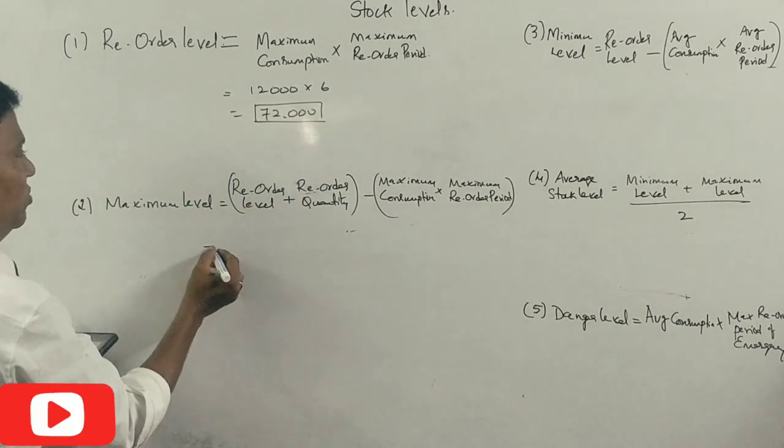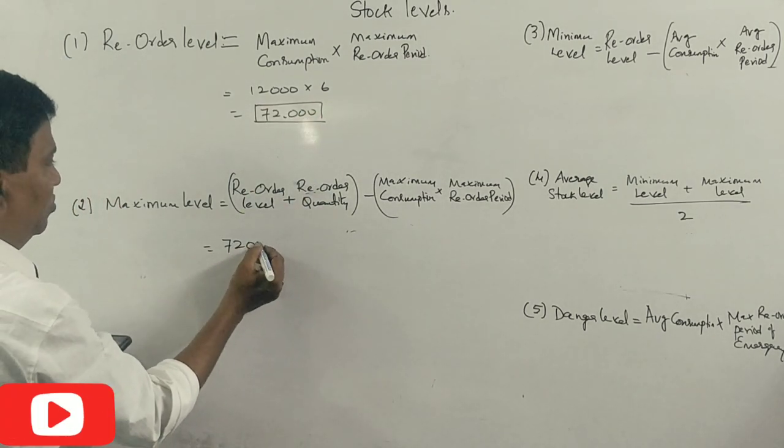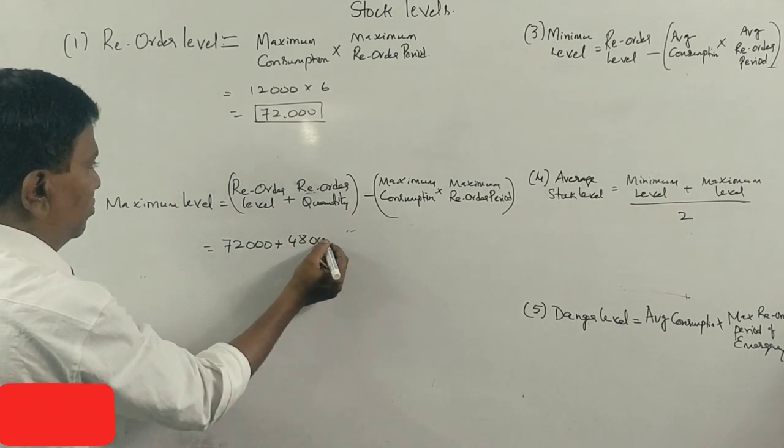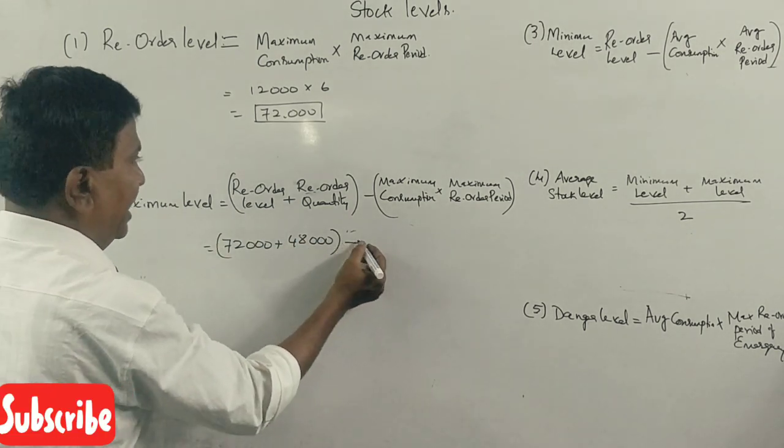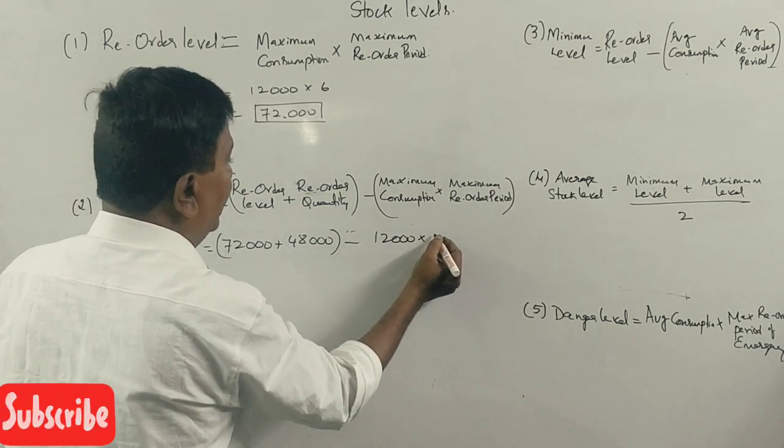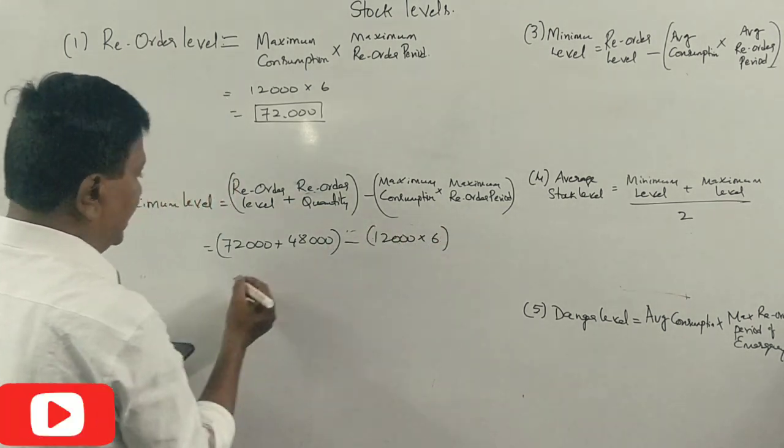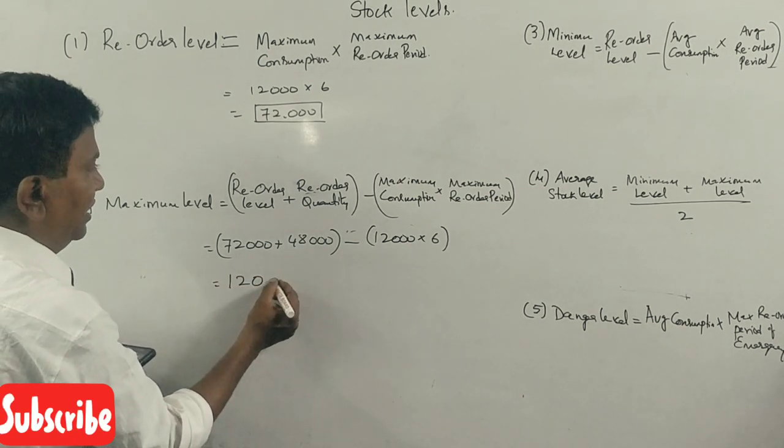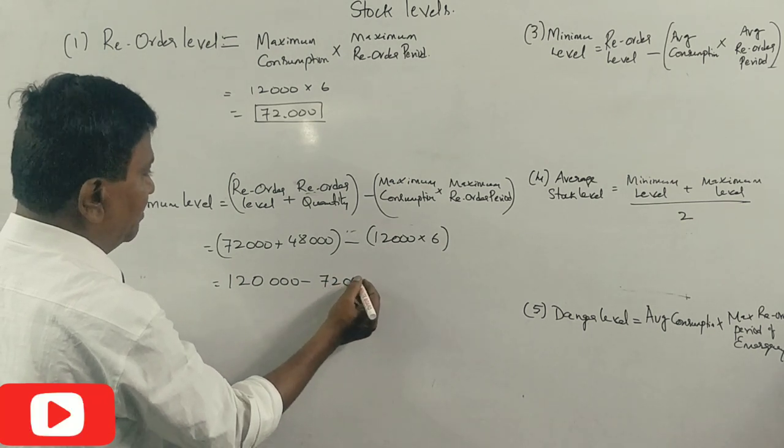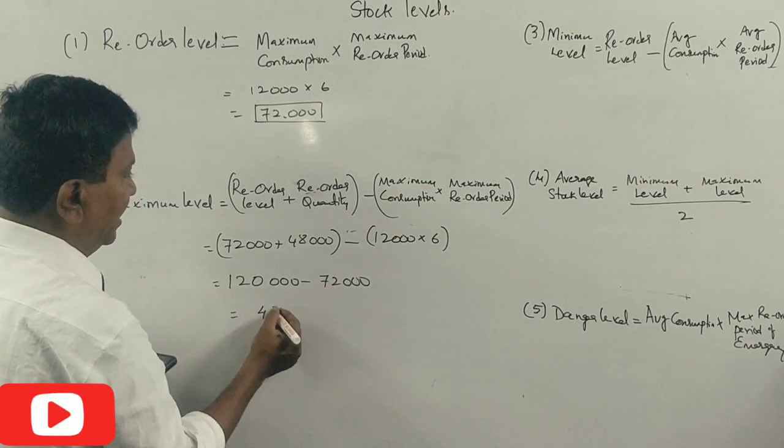Reorder level is 72,000, reorder quantity is 48,000 units minus maximum consumption is 12,000, reorder period is 6. I'll get 120,000 minus 72,000, which equals 48,000.